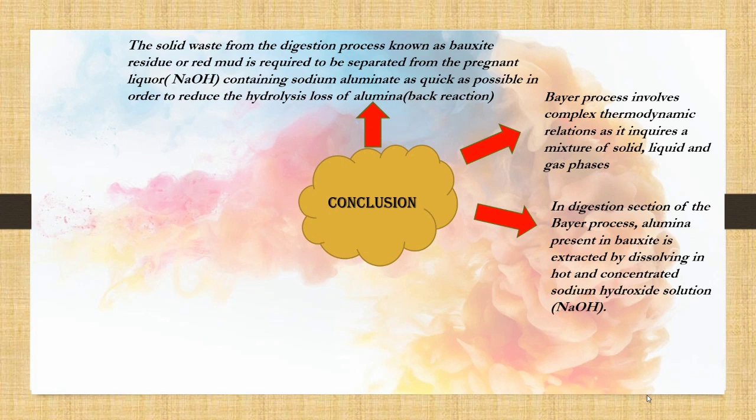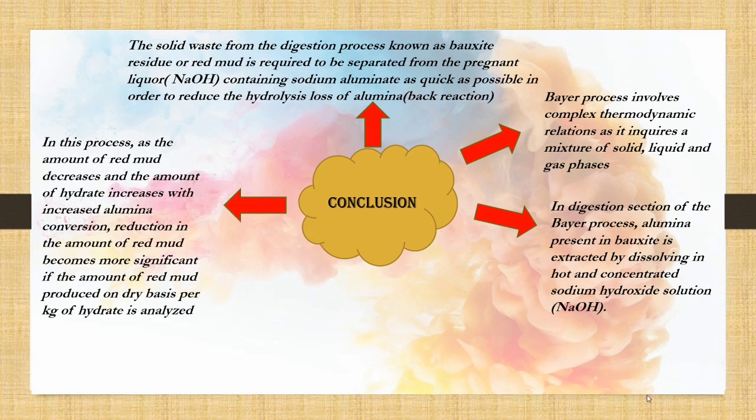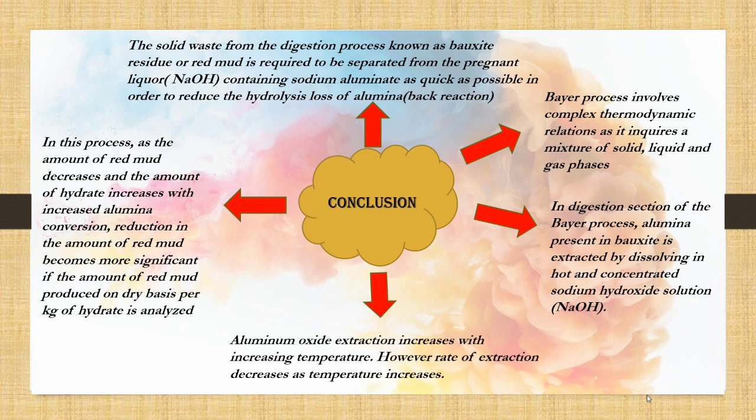Third, the solid waste from the digestion process, known as bauxite residue or red mud, is required to be separated from the pregnant liquor containing sodium aluminate as quickly as possible in order to reduce the hydrolysis loss of alumina. Next, in this process, as the amount of red mud decreases and the amount of hydroxide increases with increased alumina conversion, reduction in the amount of red mud becomes more significant if the amount of red mud produced on a dry basis per kilogram of hydrate is analyzed.